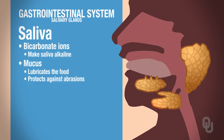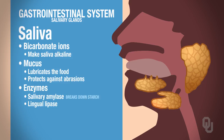You also have enzymes associated with the saliva. These include salivary amylase and lingual lipase. Salivary amylase is going to break down starch — starch digestion begins in the mouth. Lingual lipase will break down fats. However, lingual lipase is not activated until it reaches the stomach.